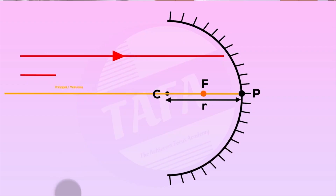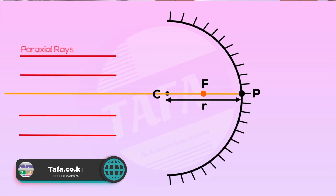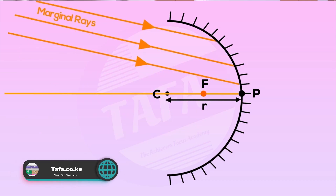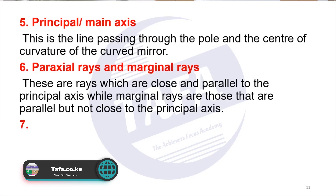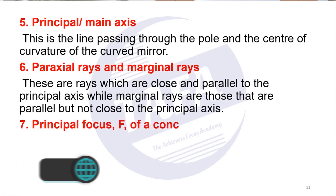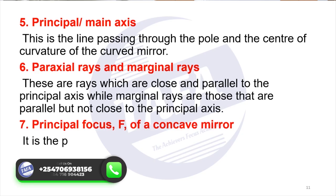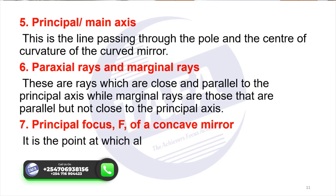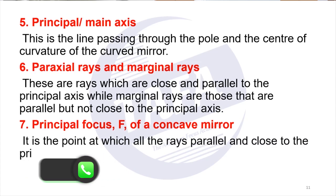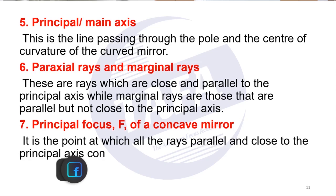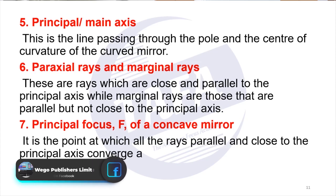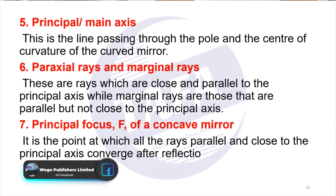Number eight — the other term we want to look at is called the principal focus, which is represented by capital F of a concave mirror. It is the point at which all the rays which are parallel and close to the principal axis converge after reflection.